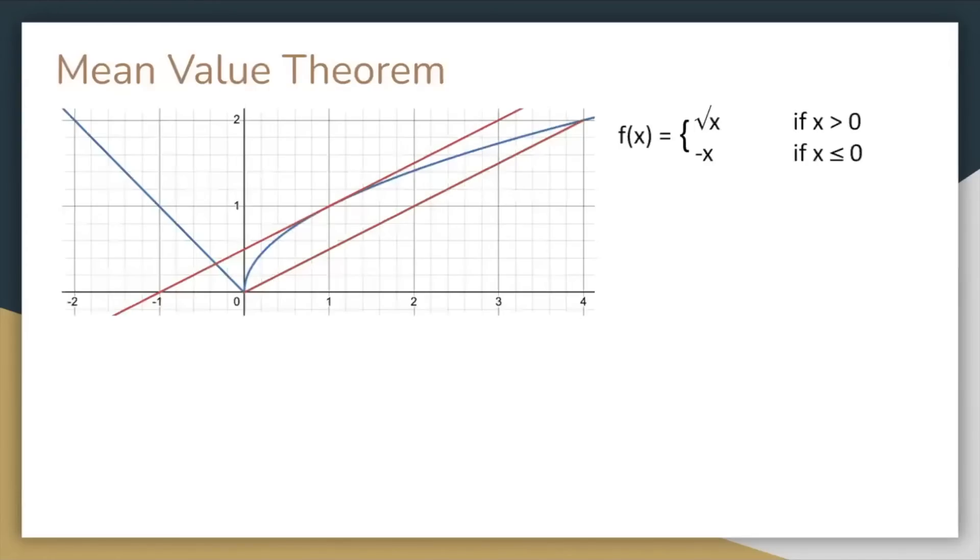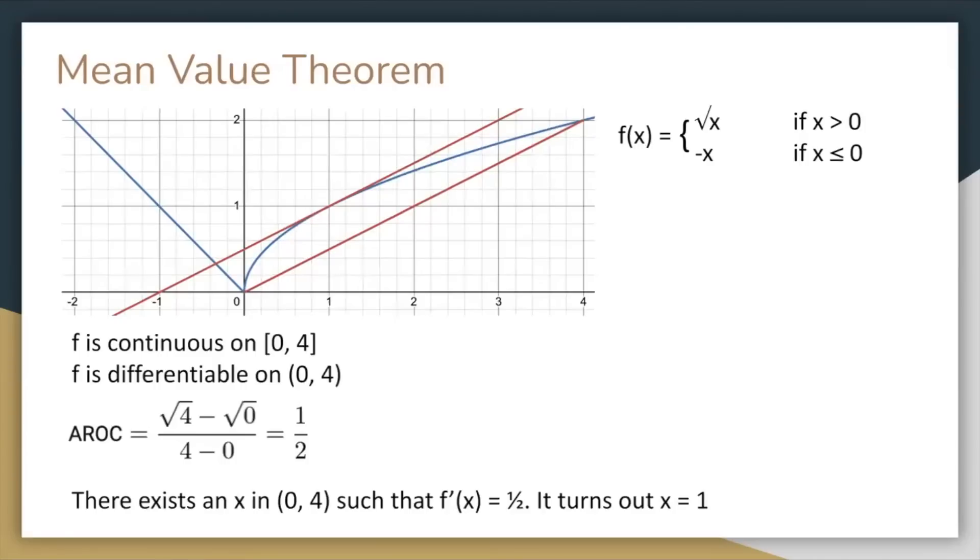The mean value theorem. So here's an example of a piecewise function and its graph. It's continuous on the closed interval 0 to 4, including that x equals 0, and differentiable on the open interval 0 to 4. Notice it doesn't have to be differentiable at x equals 0. The average rate of change from 0 to 4 is 1 half, so the mean value theorem states that there exists an x between 0 and 4 such that the derivative at x is 1 half, and it turns out x equals 1 in this case.